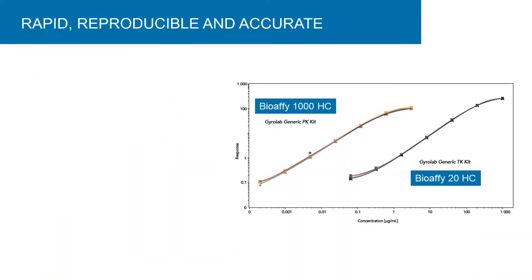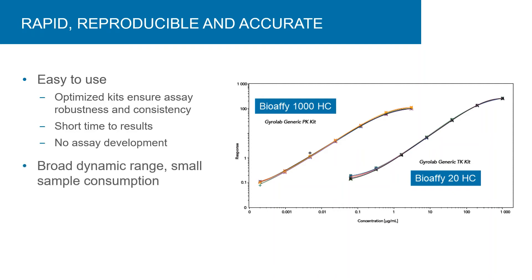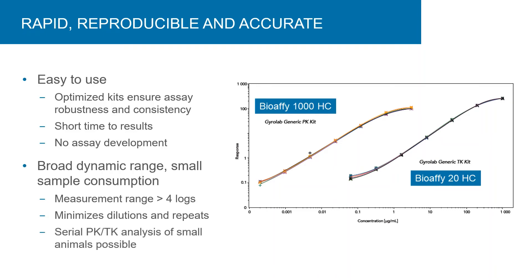Gyrolab immunoassay kits are ready to run and eliminate the need for assay development, producing rapid, reproducible, and accurate results. In this example, PK-TK assays were run using the 1000-BioAffy CD and 20-HC-BioAffy CD, and the standard curves for 6 separate runs are superimposed. The choice of 20-HC and 1000 CDs extends the assay dynamic range beyond 4 logs.